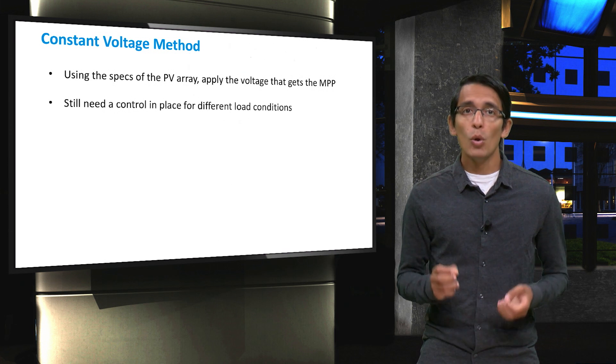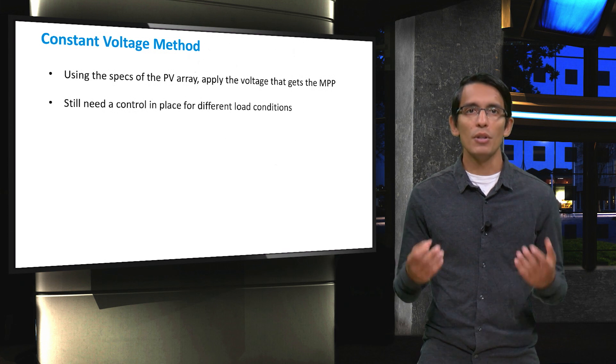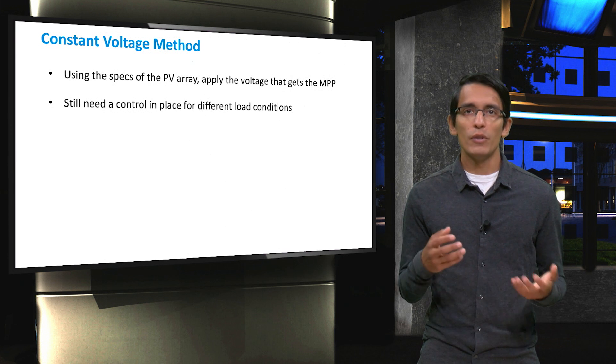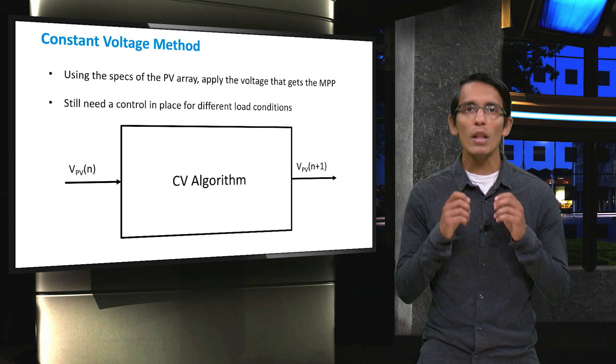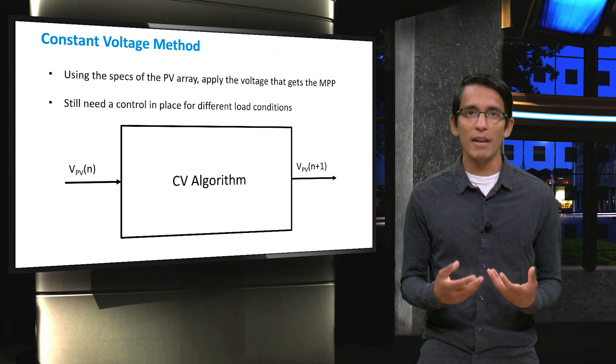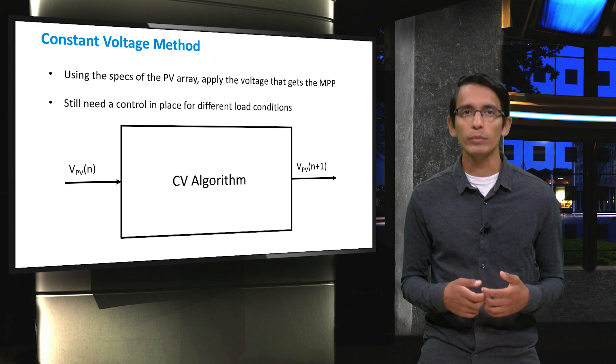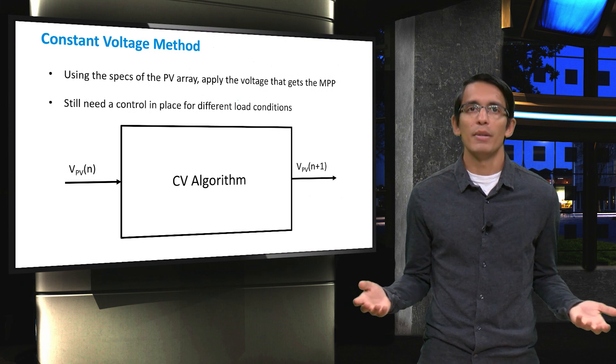However, a control is still needed because otherwise the panel would shift based on the load conditions. Furthermore, the voltage could start to drift away from the VMPP based on other external conditions. The constant voltage method simply takes the current voltage of the panel and then tweaks that voltage towards the hard-coded VMPP. As you can imagine, this method is very simple, but also has drawbacks.